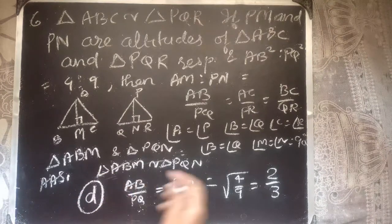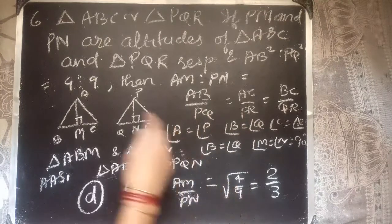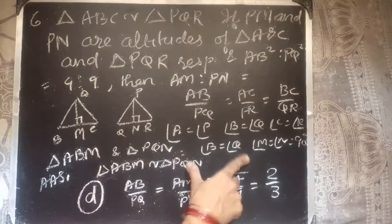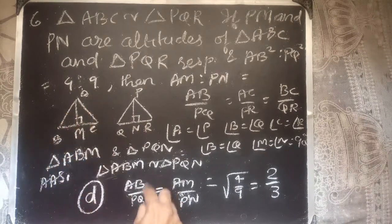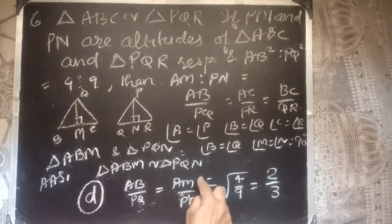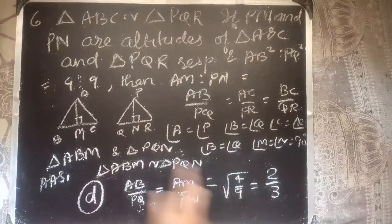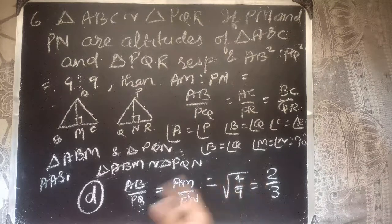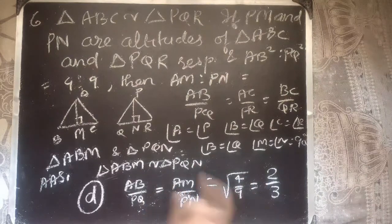Since it is an MCQ, we can directly identify that the two angles are the same, so AB/PQ = AM/PN, then just take the square root of 4/9. The detailed steps were written just for understanding — if you can do it in your mind, there is no need to write all those steps.